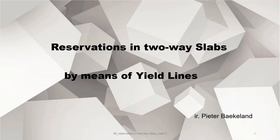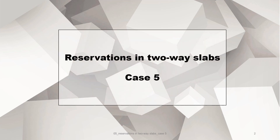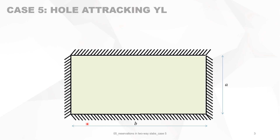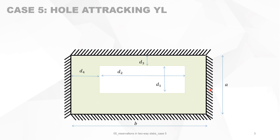This covers reservations in two-way slabs by means of yield compliance, and we will deal with case 5. Consider a rectangular concrete slab, which is a two-way slab, meaning that the longer side is at most two times the shorter side. We make a reservation into the slab.